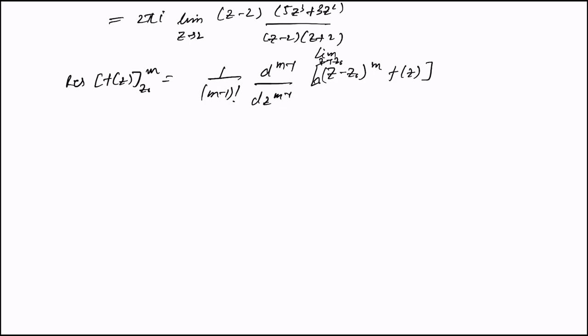So we are left with only limit z tending to 2 of (z - 2)^1 times f(z). I've used this to get the residue, and finally when we calculate this, the (z - 2) terms cancel.